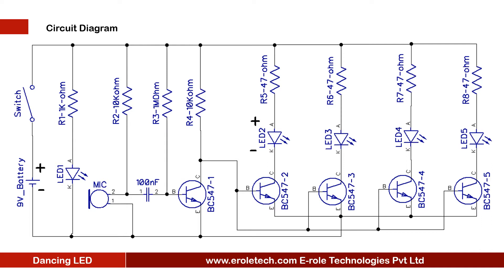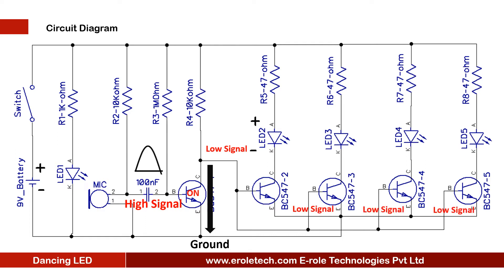When the mic does not receive any voice, terminal 2 will have a high signal. In this case, the 1 mega ohm resistor will give a high signal to the base of transistor 1, and transistor 1 will turn on. When transistor 1 turns on, its collector gets a low signal, so the bases of transistors 2, 3, 4, and 5 will also go low — all those transistors will turn off and LEDs 2, 3, 4, and 5 will turn off.